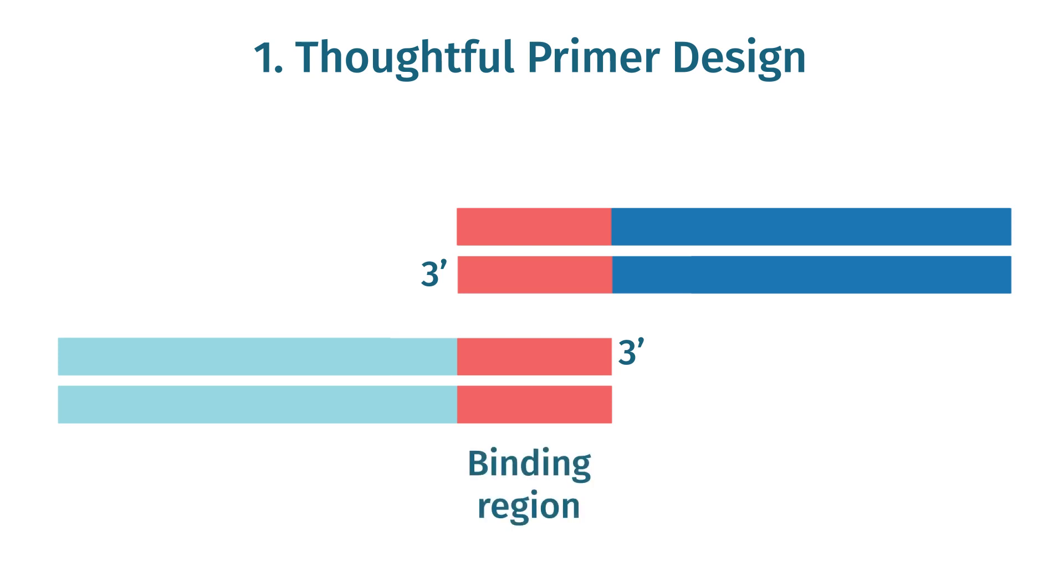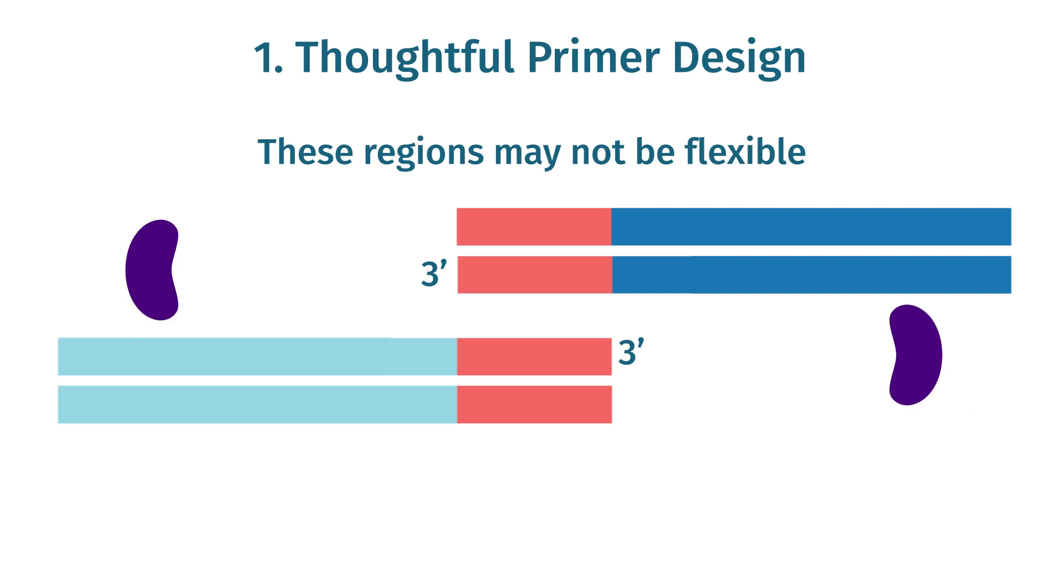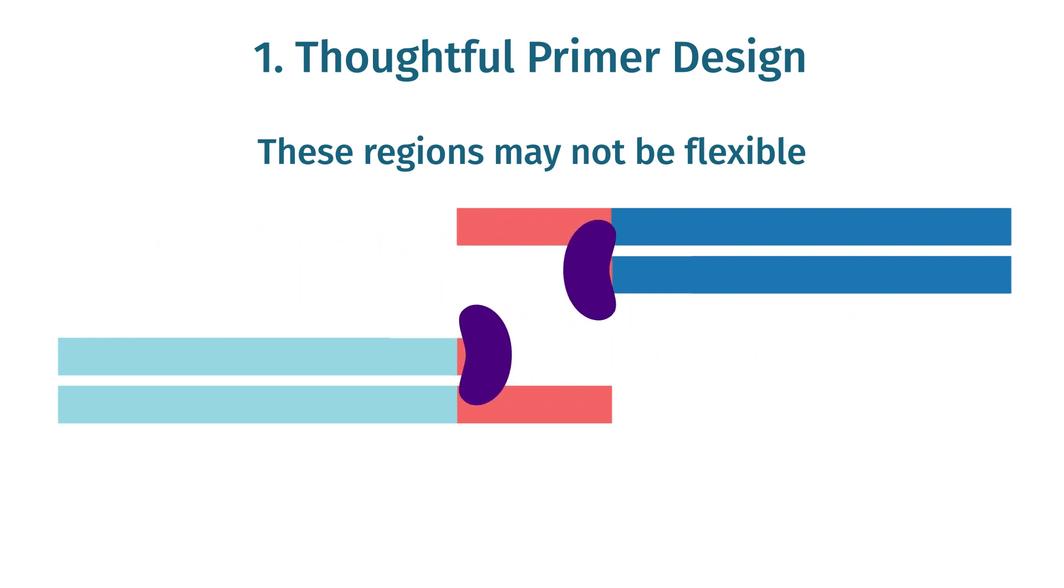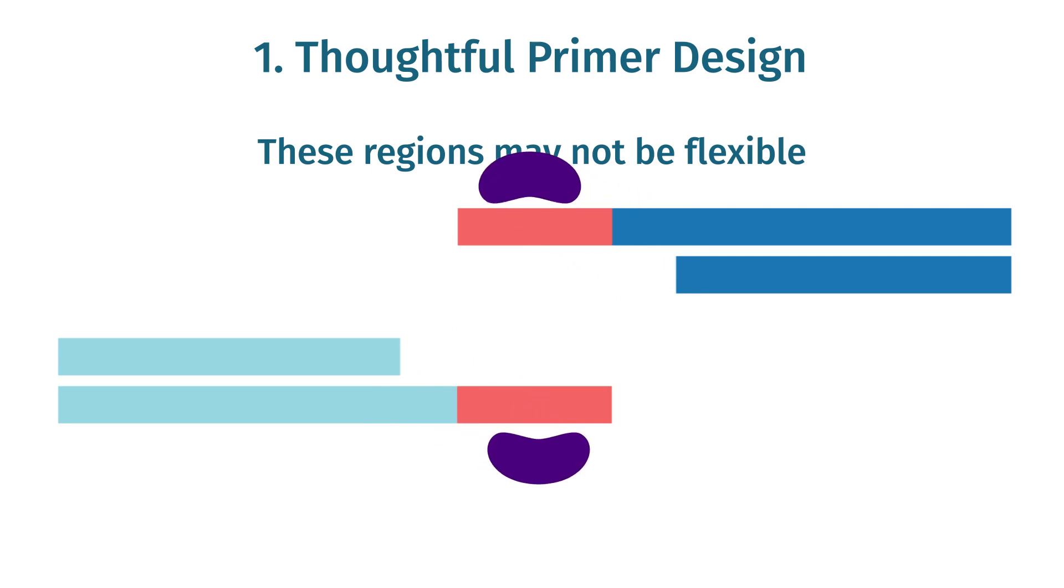The region that binds to your template, and the region that will overlap with your cloning vector or adjacent fragment. There is not always flexibility in selecting either of these regions, but if possible, you should avoid regions that can form stable secondary structures.